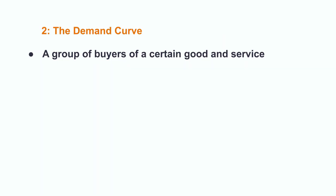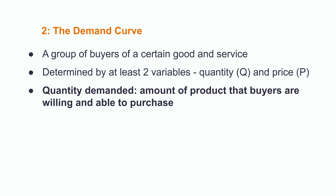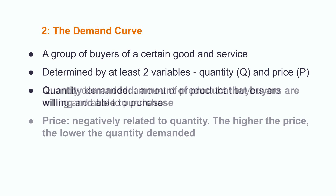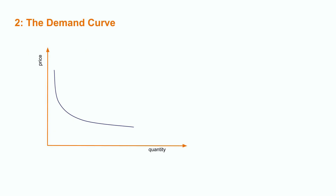Moving on with demand: demand is composed by the group of buyers of a certain good or service. In this section we will construct the demand curve. As with every curve, it is determined by at least two variables — in this case quantity, Q, and price, P. The quantity demanded is the amount of product that buyers are willing and able to purchase, and price is the amount of money required in exchange for that product. Price is negatively related to quantity, since the higher the price, the lower the quantity demanded, and vice versa. The slope of the demand curve is negative because of this inverse relationship.